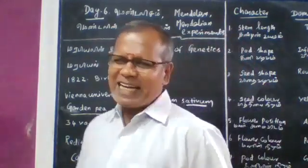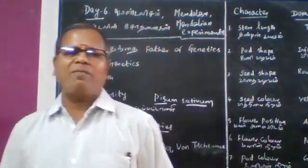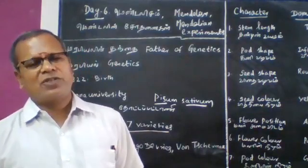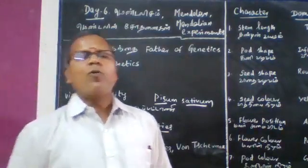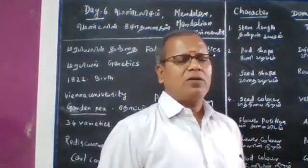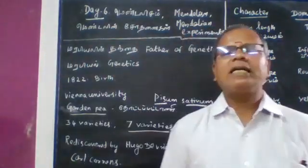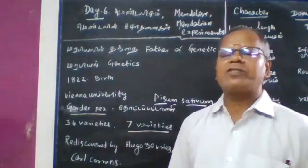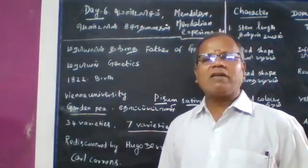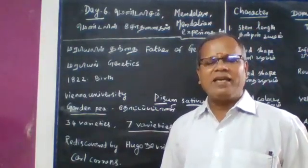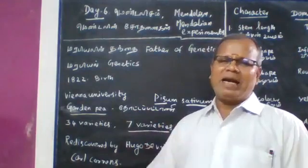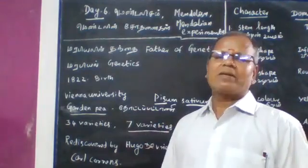In 1903, three scientists — Hugo de Vries of Holland, one scientist from Austria, and Kolkons of Germany — rediscovered Mendelian principles.